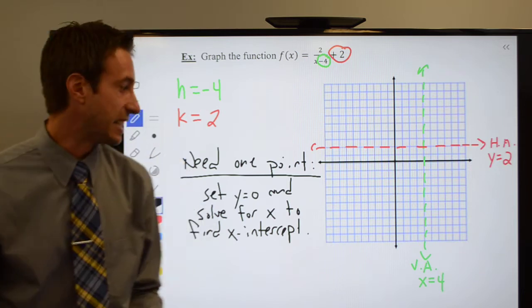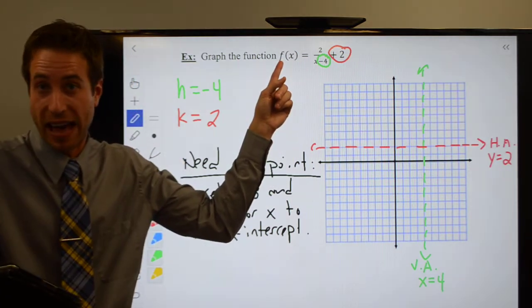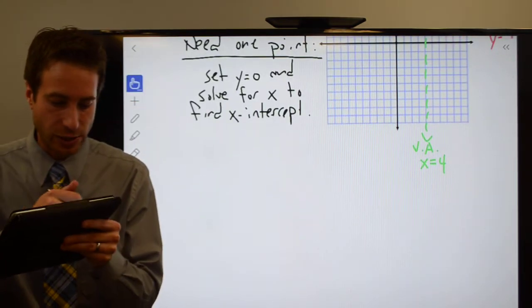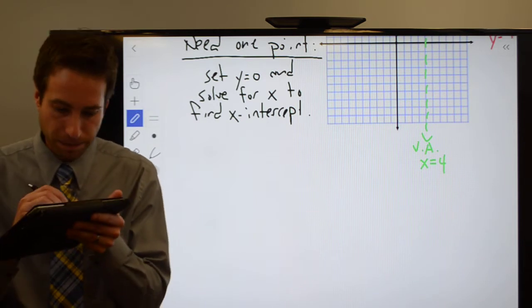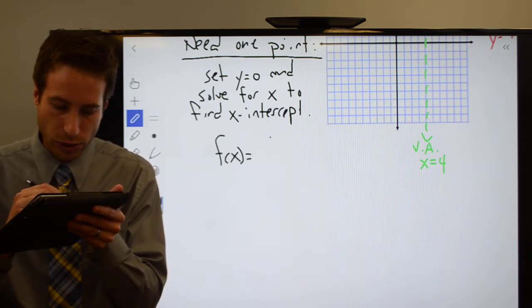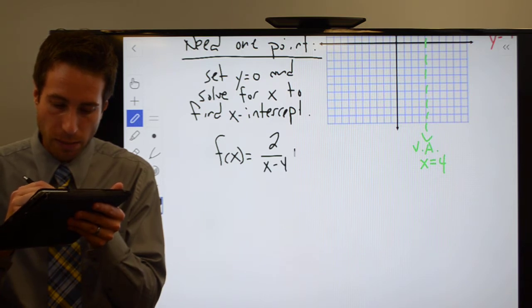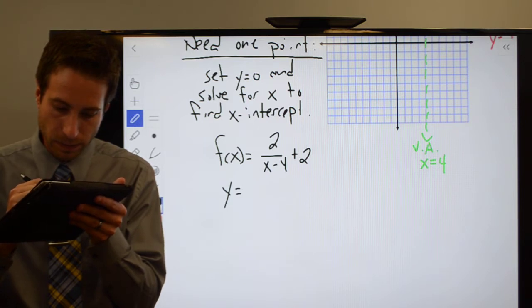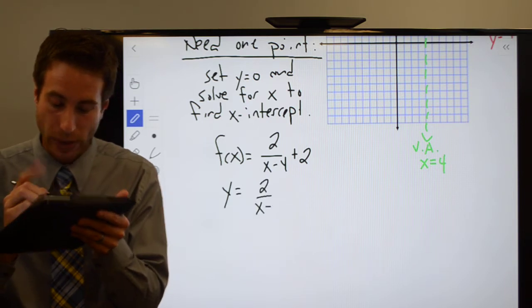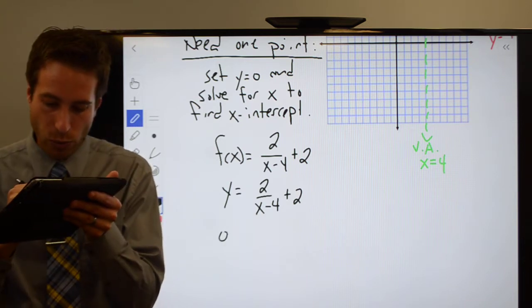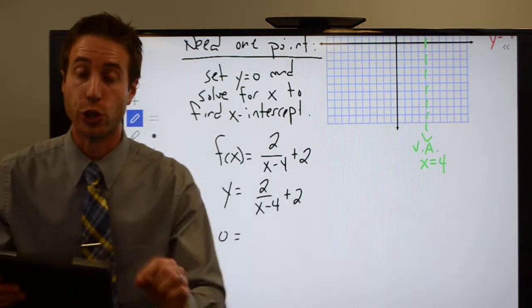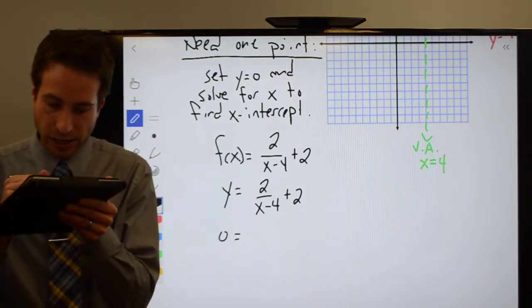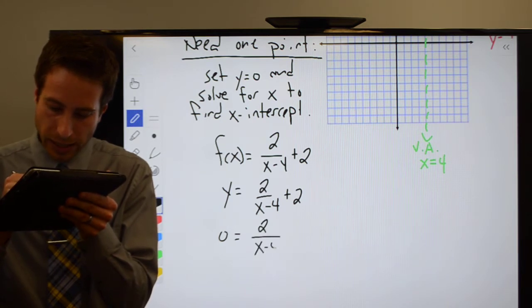So what you're going to do is set Y equal to 0 and solve for X to find the X intercept. My function is F of X equals 2 over X minus 4 plus 2. Well, F of X is Y. I'm going to let Y be 0. When Y is 0, you cross the X axis. So by setting Y equal to 0, I'm finding the X intercept. So 0 equals 2 over X minus 4 plus 2.